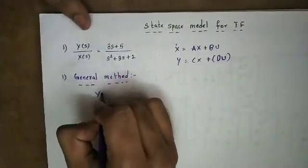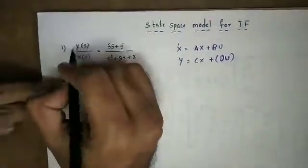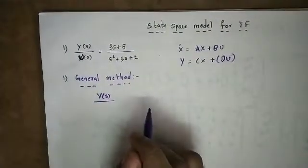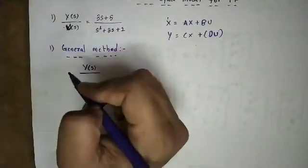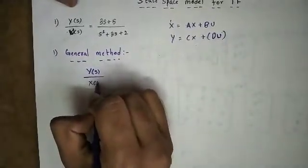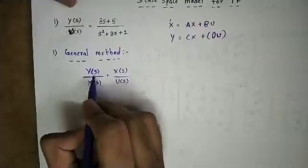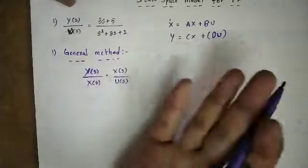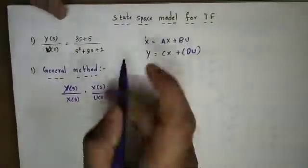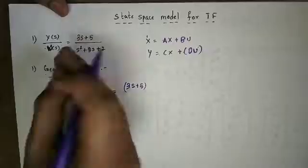For the general method: Y(s) divided by U(s). We split it as Y(s) divided by X(s), multiplied by X(s) divided by U(s). For a little simplification, I will divide and multiply. This equals 3s plus 5 — and we express this also in terms of two factors.